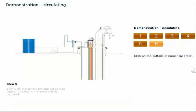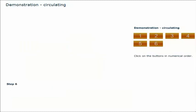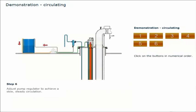Slowly fill the cofferdam and associated piping, topping up the reservoir as required. Adjust pump regulator to achieve a slow, steady circulation. This completes the demonstration of the procedure to be followed when circulating liquid through the cofferdam.